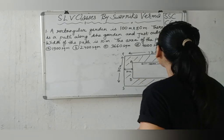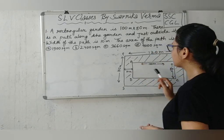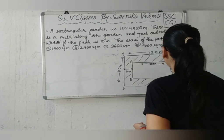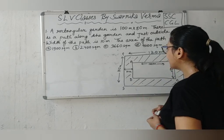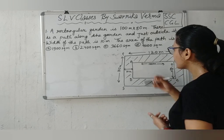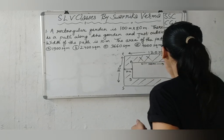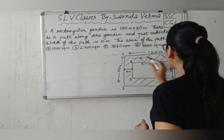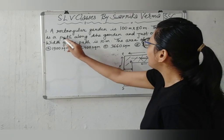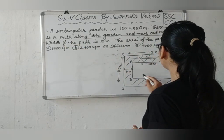Let's look at the figure. Here are two rectangles given — P, Q, R, S and A, B, C, D. We need to find this area, which is the path. Here is a path around the garden and just outside it.